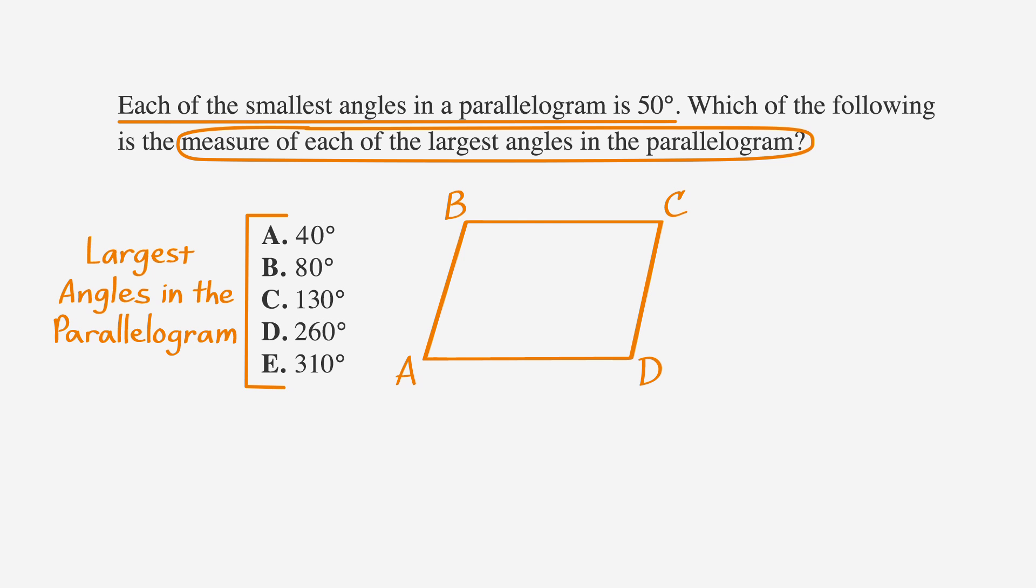We know that the smaller angles are both 50 degrees, so label angles A and C as 50. Now we can use the rules of parallelograms to determine that angles B and D must be equal. Let's mark them both as x degrees.